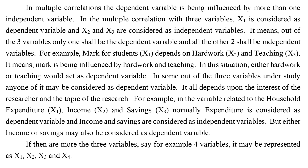In multiple correlation with three variables, x1 is considered as dependent variable and x2 and x3 as independent variables. For example, a student's marks (x1) depend on hard work (x2) and teaching (x3). Out of three variables, any one may be considered as dependent depending on the interest of the researcher and topic of research.